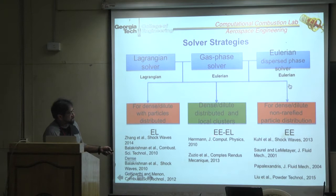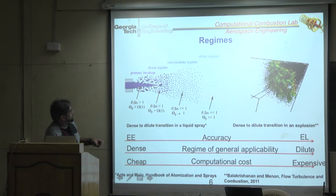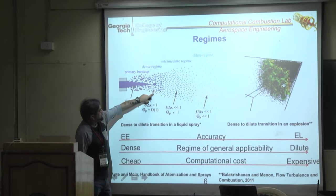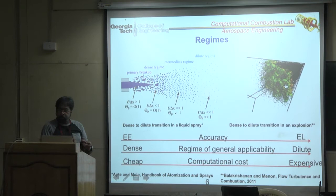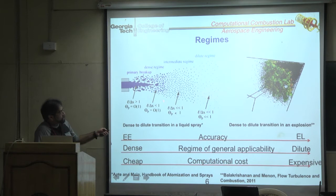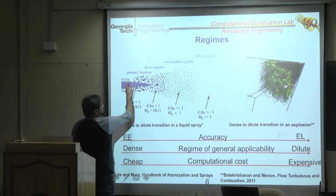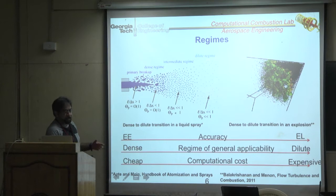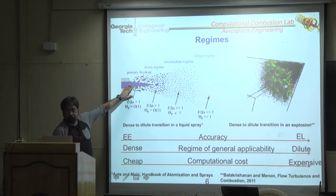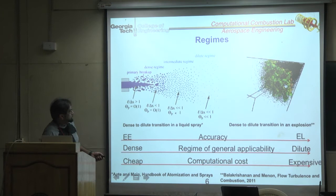In a liquid jet breaking up you get ligament-like structures; in the dense-loading region particles are closer together. The model treats these as point particles — to deal with the full liquid ligament structure you'd need volume-of-fluid or interface tracking methods, which are too expensive for real systems and have conservation errors.